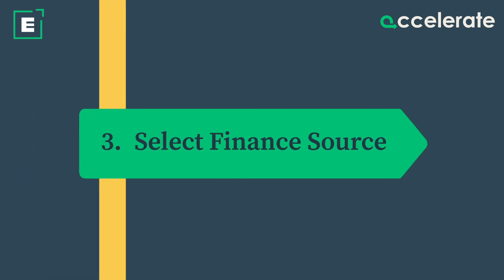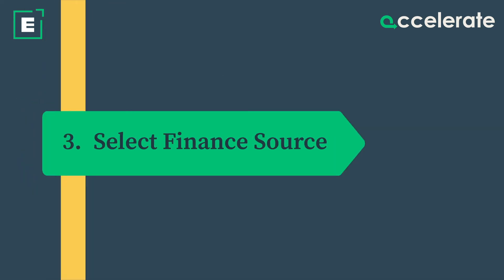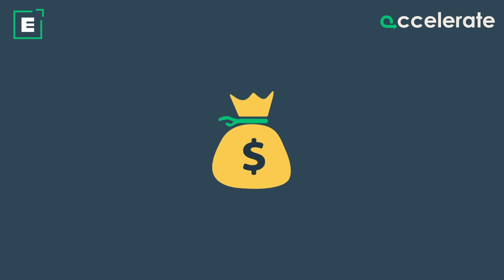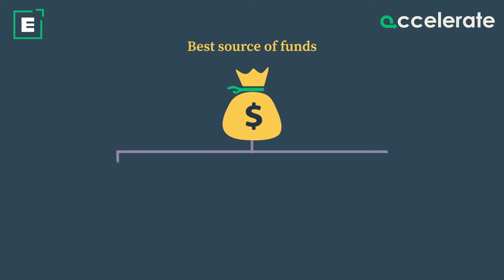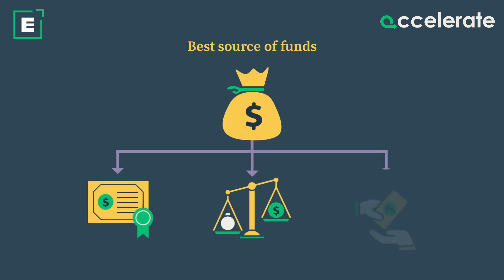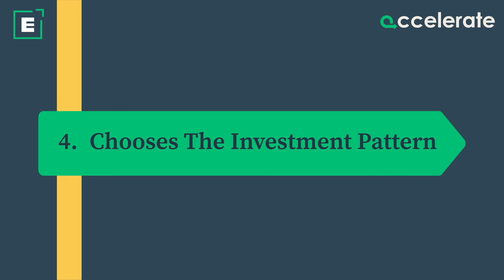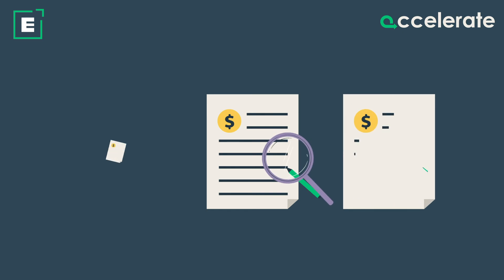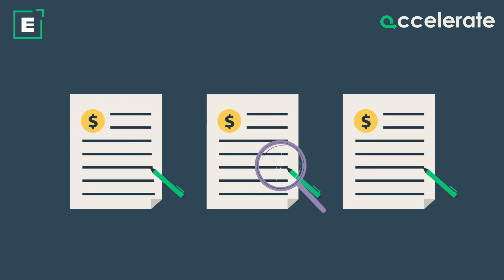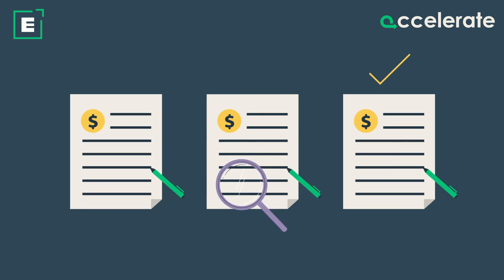3. Select finance source: Companies can employ financial management techniques to select the best source of funds by comparing between shares, debentures, loans, etc. 4. Chooses the investment pattern: Financial management analyzes and evaluates various investment proposals and helps find the one best suited for the company.